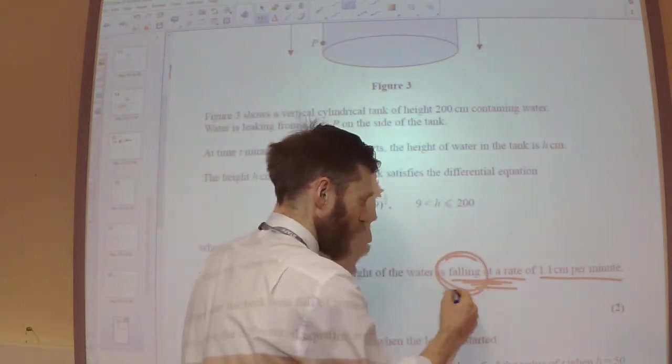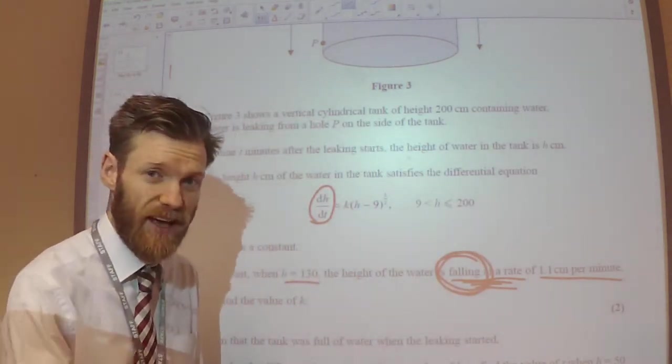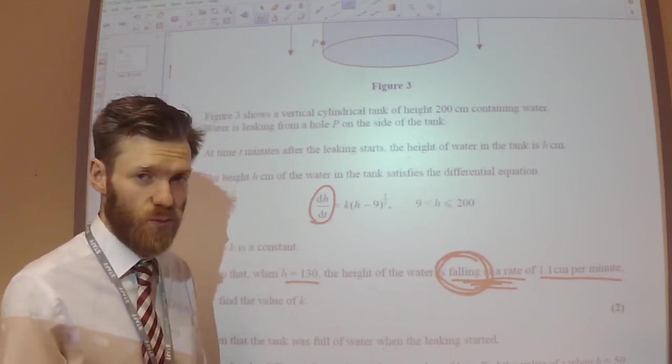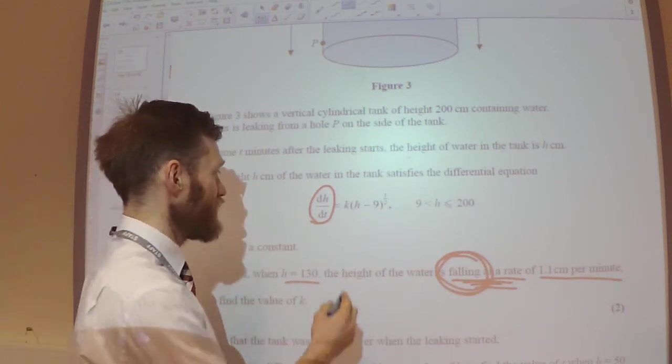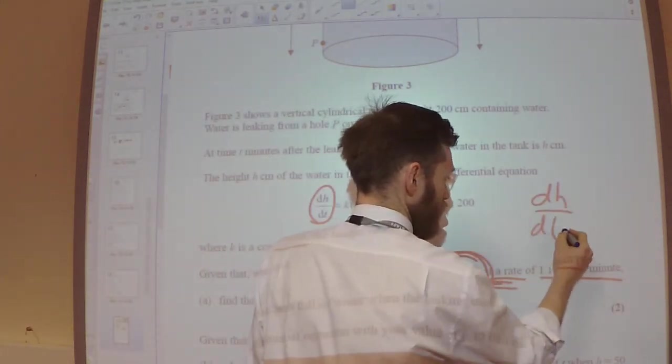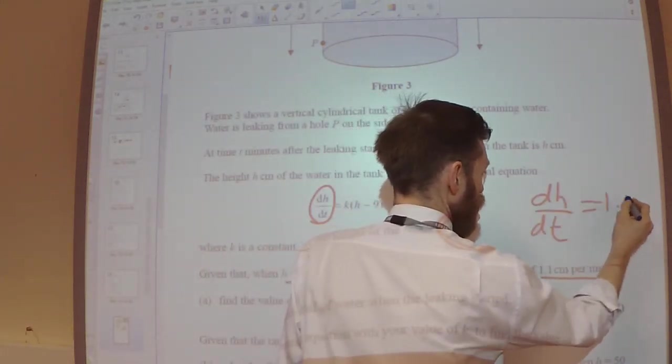But it's falling. It's going down. So actually it should have been minus 1.1. DH by DT is minus 1.1.